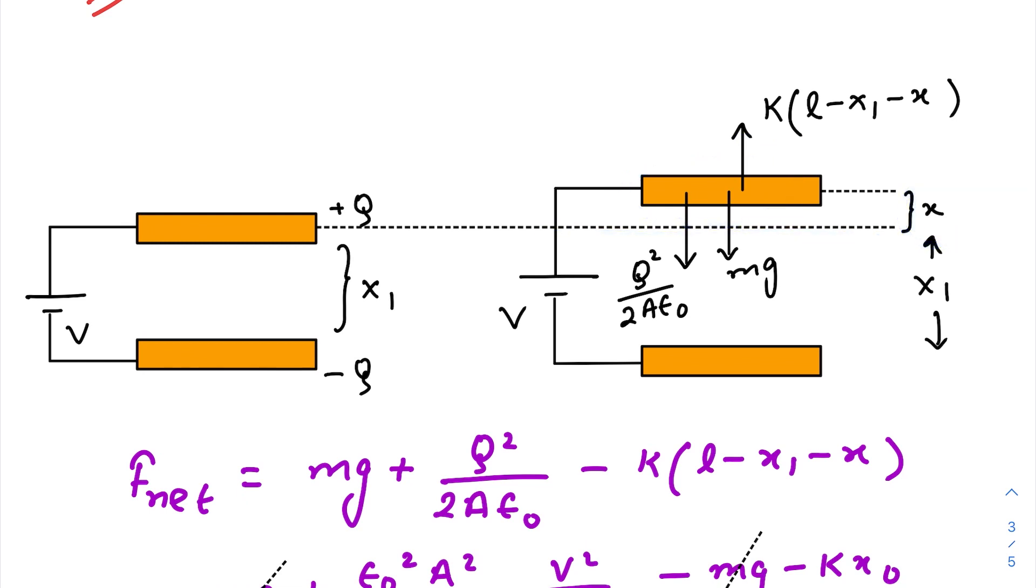Now what happens? You just need to know how to write the net force acting on the body. So on this plate, the downward force is mg. The new electrostatic force due to this lower plate is this one. Of course, q is a function of x here because that capacitance is changing with position.